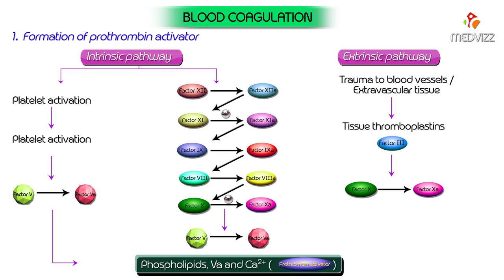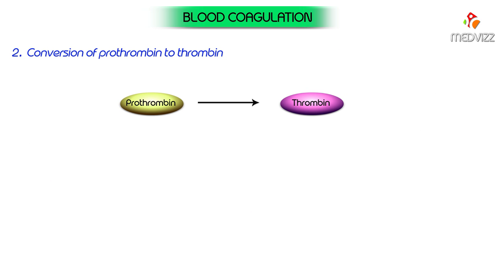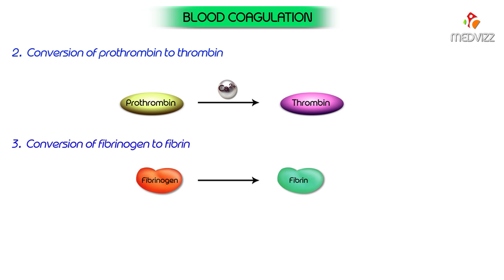Extrinsic pathway: trauma to blood vessels or extravascular tissue leads to activation of tissue thromboplastin (factor 3), which leads to activation of factor 10 to factor 10a in the presence of factor 7 and calcium. This activated factor 10a leads to activation of factor 5 to factor 5a. Prothrombin is then converted to thrombin in the presence of calcium ions, and fibrinogen is converted to fibrin, which in turn is converted to fibrin threads in the presence of activated factor 13 and calcium.